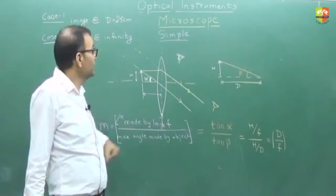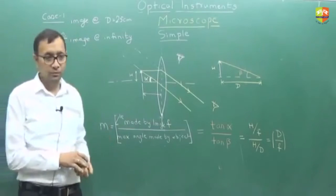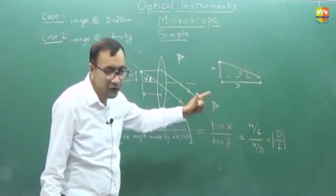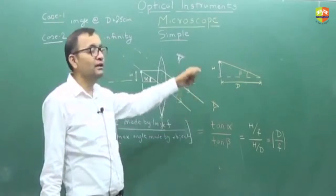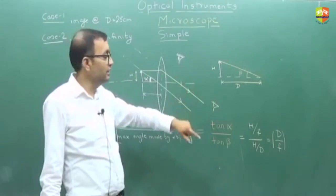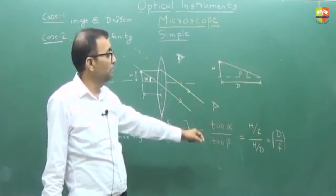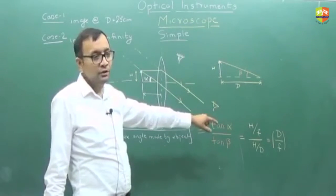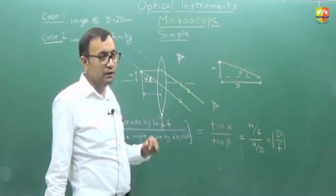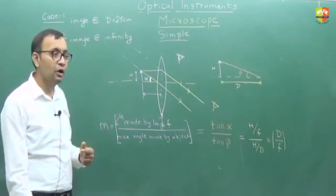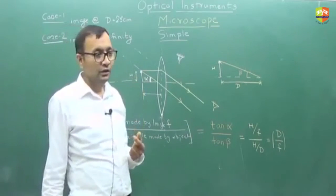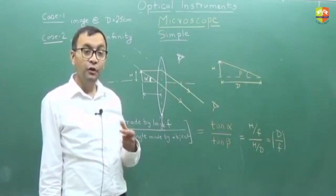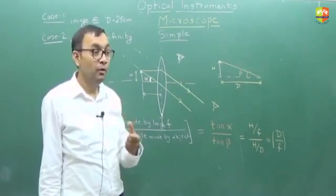This is about the simple microscope. The problem is that D is around 25 and the minimum focal length F is about 0.1, giving a maximum magnification of about 250. But if you want magnification of the order of 10,000, the simple microscope won't be able to do that — so we use a compound microscope.